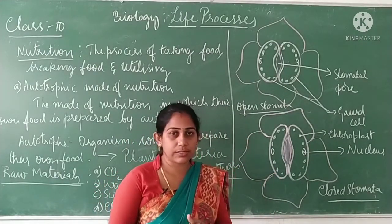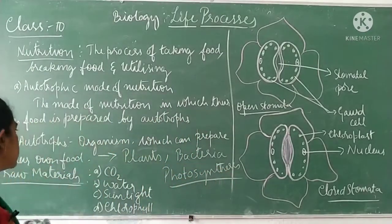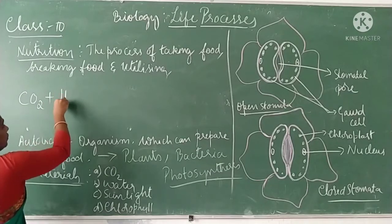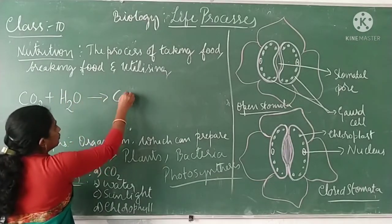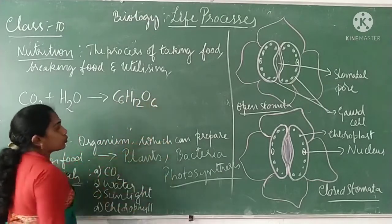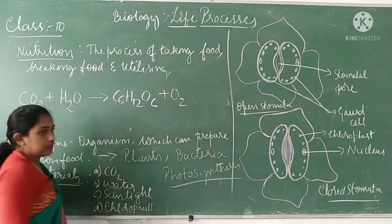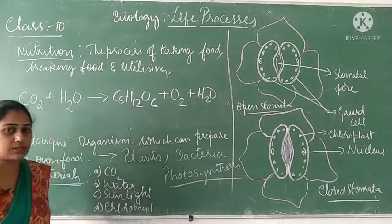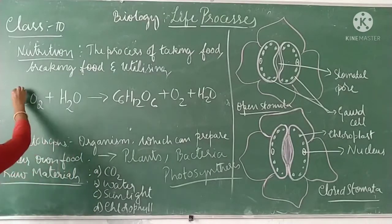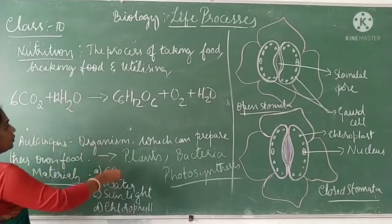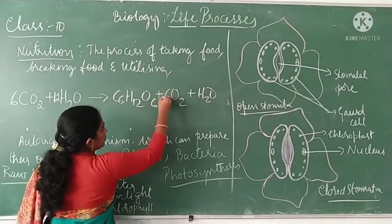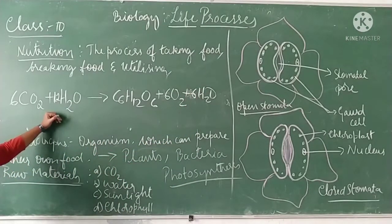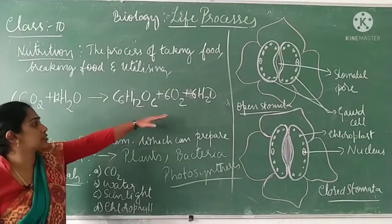The photosynthesis equation: carbon dioxide and water are used to produce glucose plus oxygen. A small amount of water is also released as a byproduct. The balanced equation is: 6CO₂ + 6H₂O → C₆H₁₂O₆ + 6O₂ + 6H₂O. This takes place in the presence of sunlight with the help of the pigment chlorophyll.